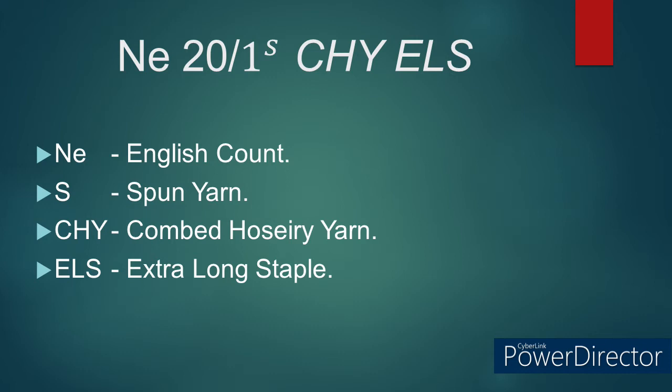Example: DCH32 variety cotton has a staple length of 32 mm. The yarn manufactured using this DCH32 variety cotton is called as extra long staple yarn. With this ELS yarn we would get more strength, less hairiness, and more uniform quality in the fabric.